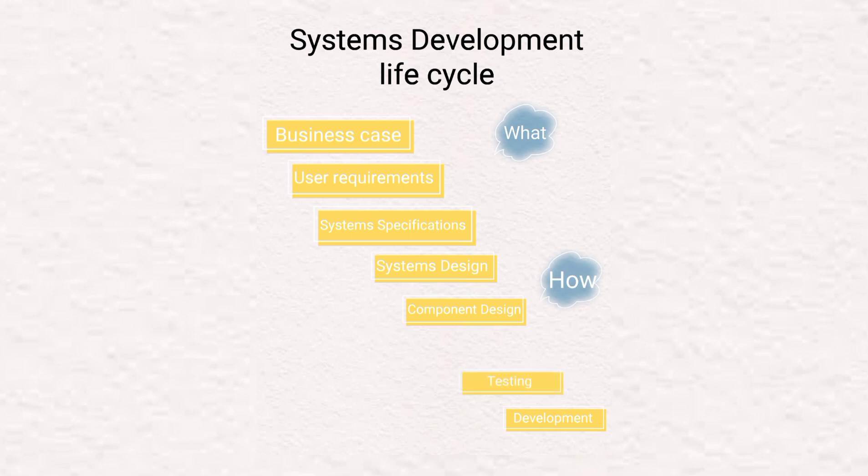All three of these steps help us understand what the system is going to be about — what the system actually entails. After we've discovered that, we move on to how we're going to develop the system by following the steps of design, then component design, then we develop, test, and then implement our system for our client.